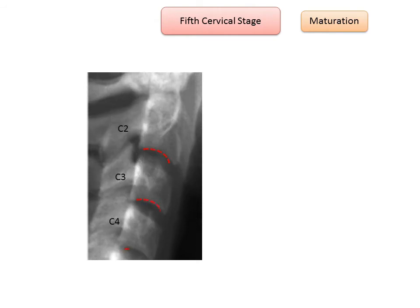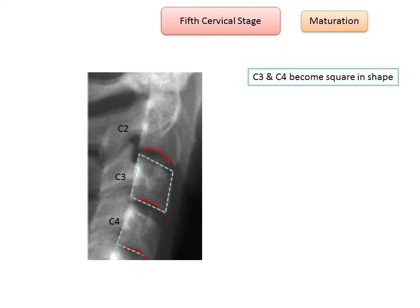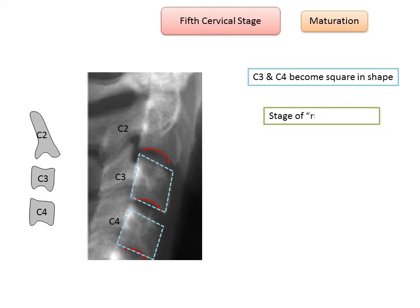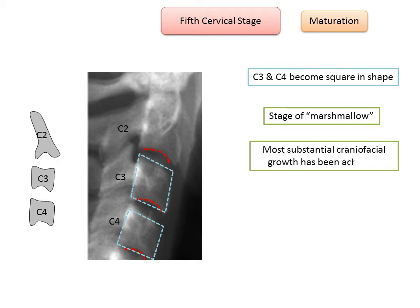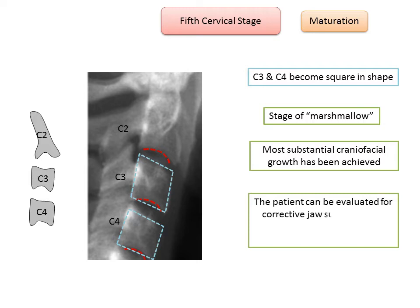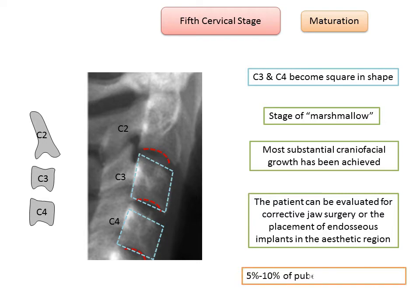The fifth cervical stage, CS5, is the stage of maturation. All three cervical bodies — C2, C3, and C4 — have notches on the inferior surface, and the bodies of C3 and C4 become square in shape; the vertebral bodies assume the shape of a marshmallow. When this stage is reached, most substantial craniofacial growth has been achieved. The patient can be evaluated for corrective jaw surgery or placement of endosseous implants in the aesthetic region. Five to ten percent of pubertal growth remains by the end of this stage.